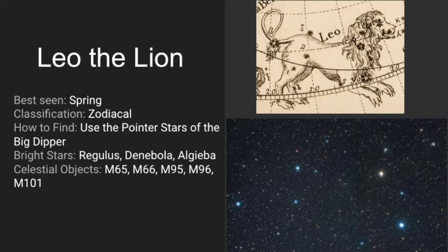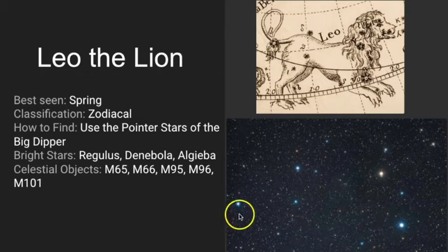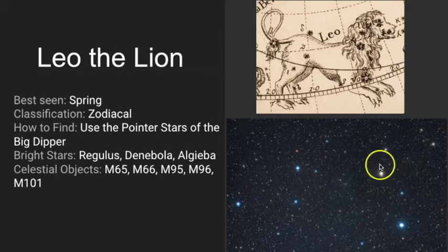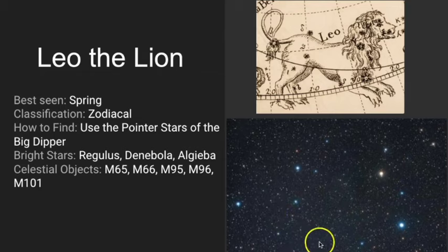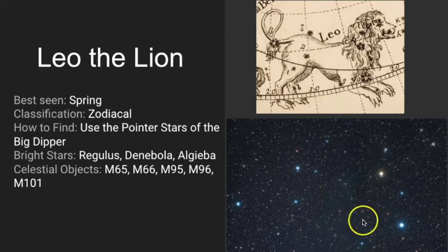The bright stars to know are Regulus, meaning Little King; Denebola, meaning Lion's Tail; and Al Jieba, which is a double star meaning the brow or forehead of the lion. The celestial objects to look for are M65 and M66 in one region, and M95, M96, and M101 in another.